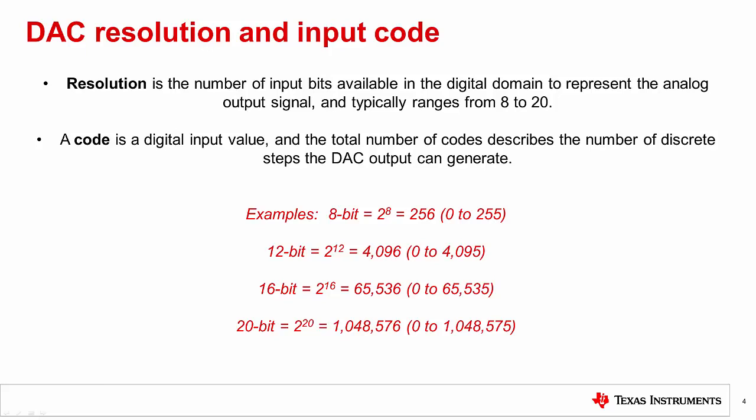A DAC code is a digital input value and the total number of codes describe the number of discrete steps the DAC output can generate. Let's look at a couple examples of this. If you had an 8-bit DAC, that means you would have 2 to the 8 input codes. That's 256 discrete levels ranging from 0 to 255. If you had a 16-bit DAC, that means you'd have 2 to the 16 input codes, or about 65,000, ranging from 0 to 65,535.